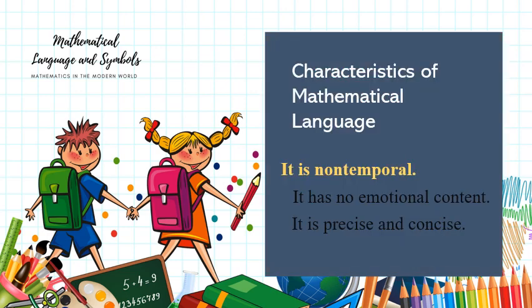Let's proceed with characteristics of mathematical language. There are three characteristics: it is non-temporal, it has no emotional content, it is precise and concise. Let's proceed with it is non-temporal. When we say non-temporal, it means that it has no past, present, and future. There is no conjugation of words in mathematics in the manner that English has a conjugation of verbs. Mathematical statements are presented simply as is. In math, our verb is 'is,' 'is equal to.' That makes the mathematical statement correct.